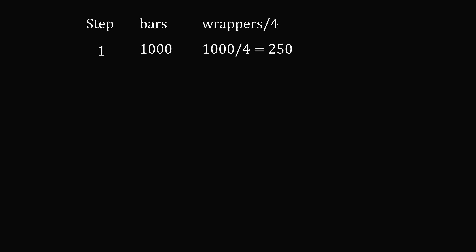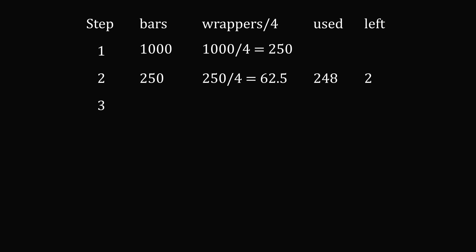Now let's solve Problem 2. The first way is the long way. We'll consider the step, the number of bars Charlie could get, and the number of wrappers divided by 4. In the very first step, Charlie takes his $1,000 and gets 1,000 chocolate bars. We take those 1,000 wrappers divided by 4, which gives 250 additional chocolate bars. In step 2, Charlie gets 250 chocolate bars. We then take those 250 wrappers and divide by 4, getting 62.5 — so we need to be careful about accounting. Charlie can use 248 of those wrappers, which is evenly divisible by 4, and will be left with 2 wrappers. Taking 248 divided by 4, we get 62 more chocolate bars.